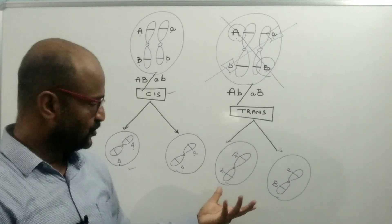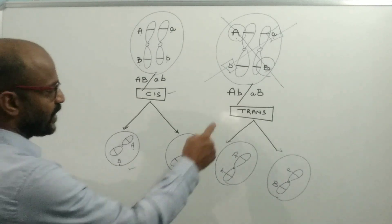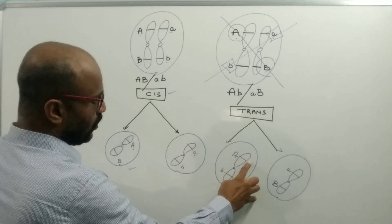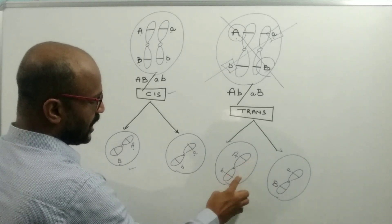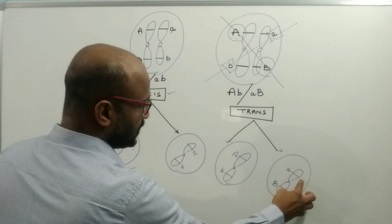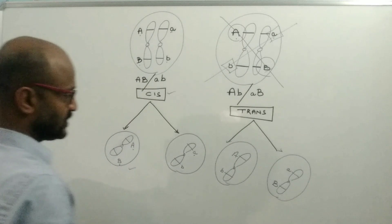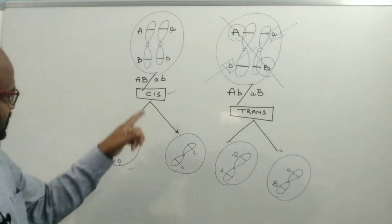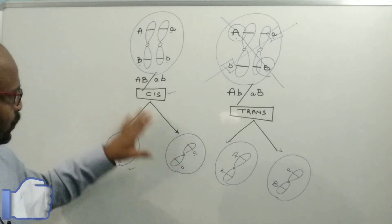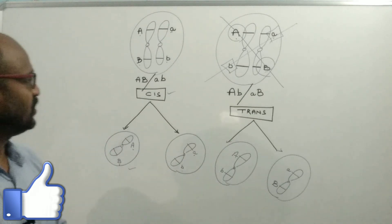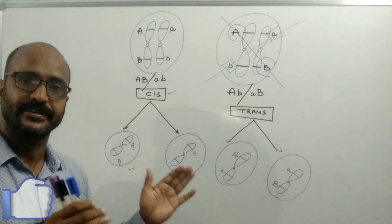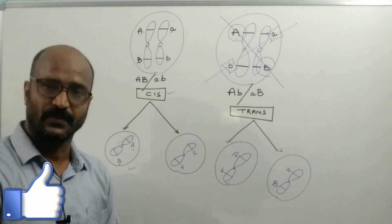In trans arrangement, one gamete contains one dominant allele (capital A) and one recessive allele (small b), and another gamete contains small a and capital B — each gamete gets 50% dominant and 50% recessive alleles. But in cis arrangement, one gamete contains all dominant alleles and another contains all recessive alleles. This is the cis and trans arrangement of alleles or linked genes on chromosomes. Thank you for watching.